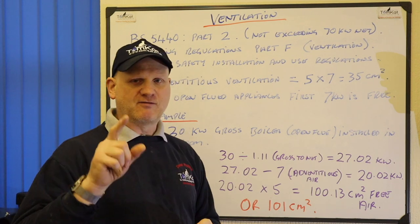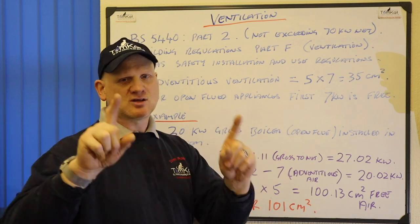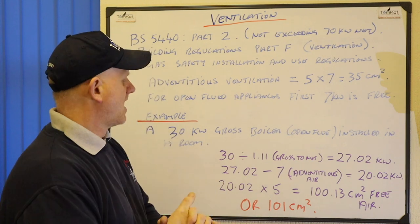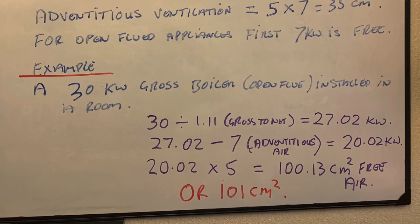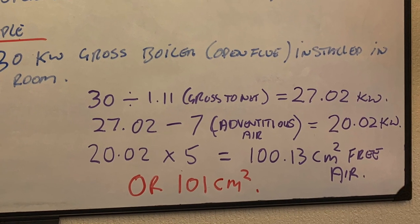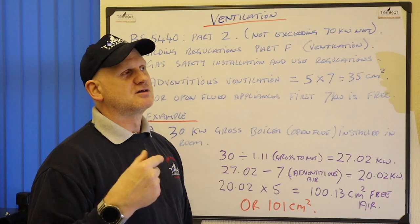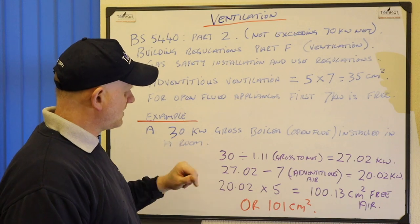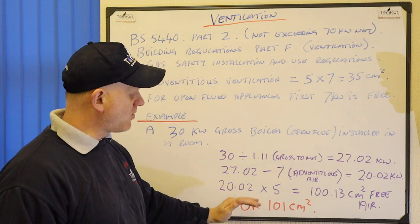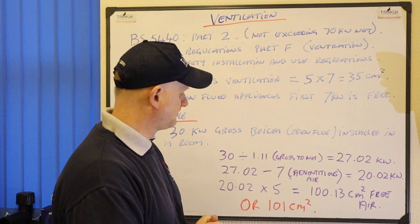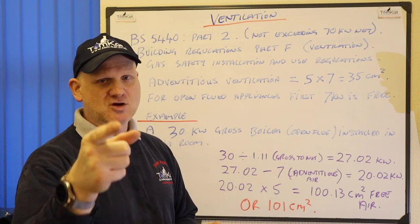Because we know it's gross, the first thing we need to do is turn it to net, because since 2000 we've always used the net figure. So 30 divided by 1.11 — because turning gross to net is 1.11 for natural gas — gives us 27.02 kilowatts. Then 27.02 minus the adventitious air of 7 kilowatts gives us 20.02 kilowatts, and then we times that by 5, which gives us 100.13cm² of free air as a minimum — we could round that up to 101cm².